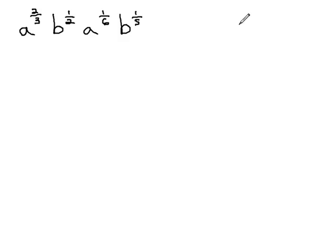To simplify this, we recall we have an exponent property that says if we've got something to an exponent times that same thing to another exponent, what we can do is add those exponents together as we combine the variable.